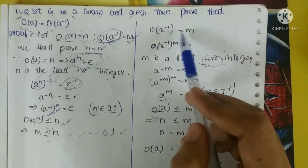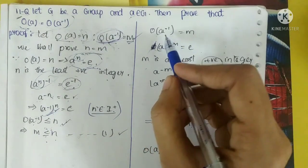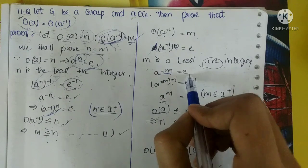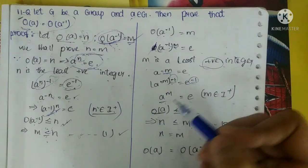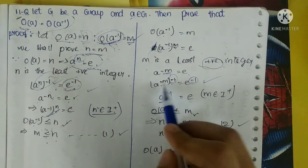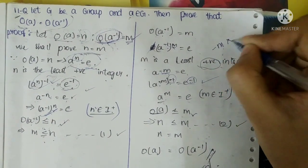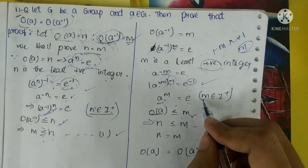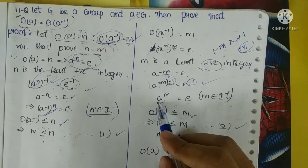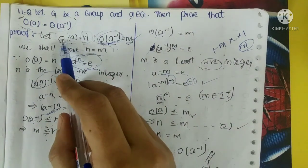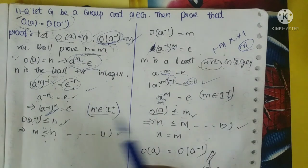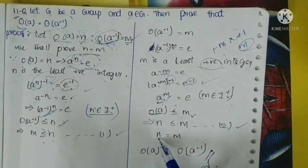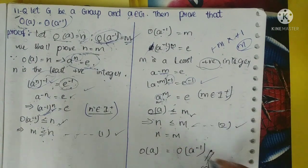Same following process for the second half: O(A⁻¹) = M means (A⁻¹)^M = E. Multiplying both sides by (-1): A^(-M) times (-1) gives A^M = E. M belongs to positive integers. Since A^M = E, O(A) ≤ M — so N ≤ M. Substituting N for O(A), we get N ≤ M.